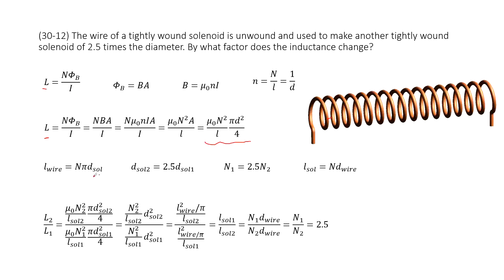Now as we talked about, the d₂, so the second diameter should equal to 2.5 times d, the first solenoid diameter. So we have this equation. This is given in the problem.